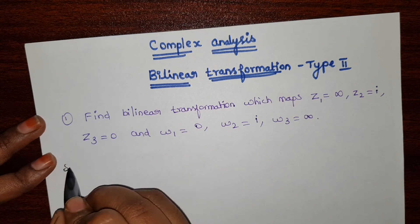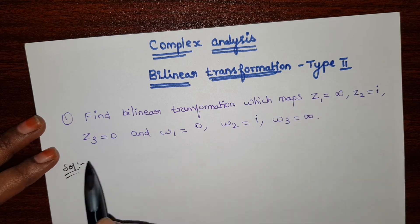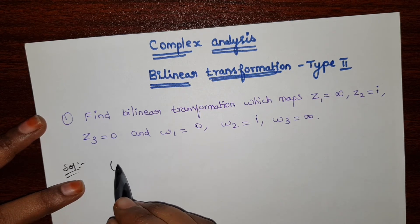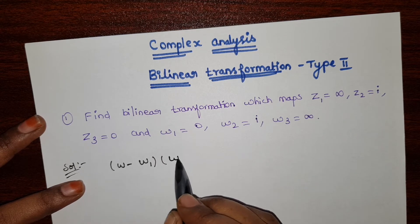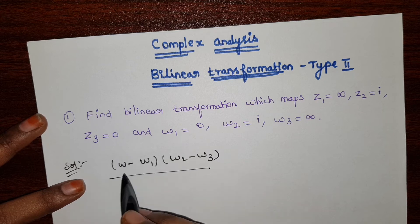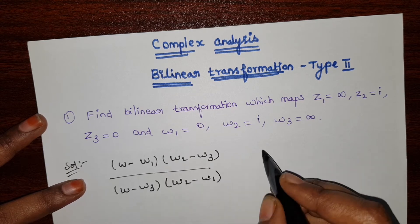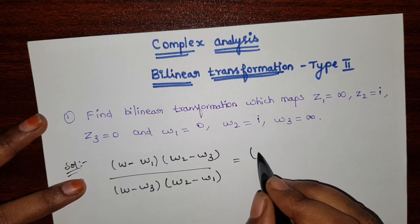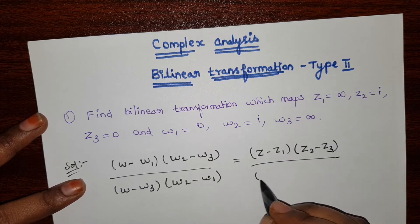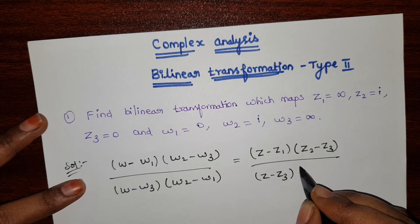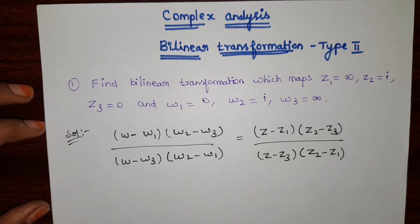In the previous video, we have seen the formula for bilinear transformation for 3 points. Once again I repeat the formula: (w minus w1)(w2 minus w3) divided by (w minus w3)(w2 minus w1) equals (z minus z1)(z2 minus z3) divided by (z minus z3)(z2 minus z1). This is the formula for bilinear transformation for 3 points.